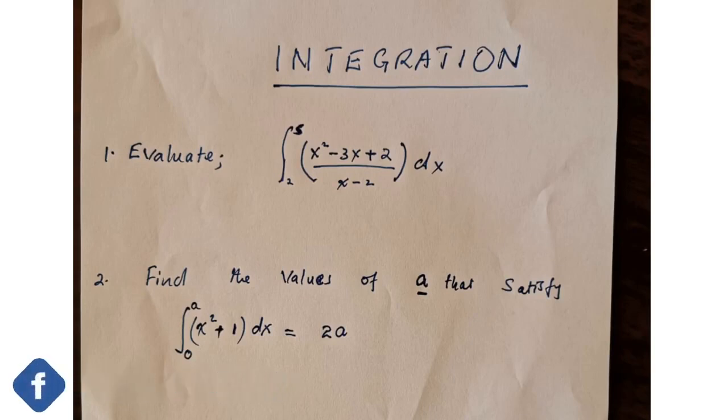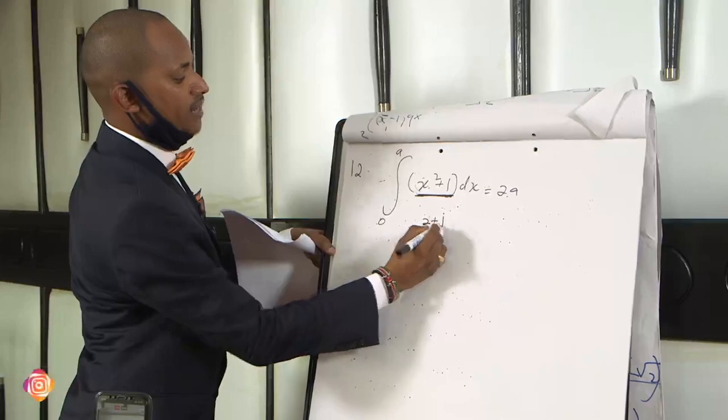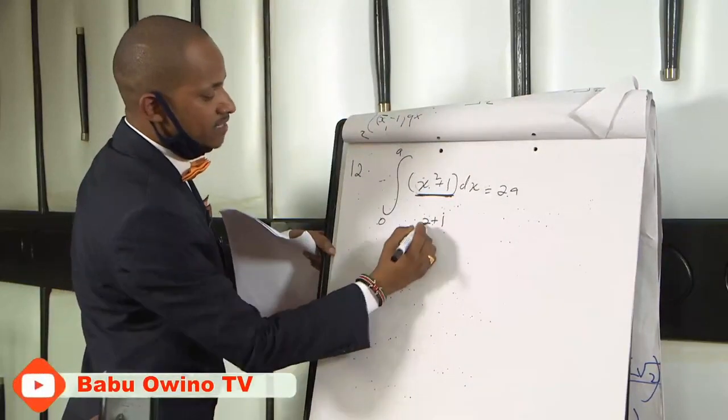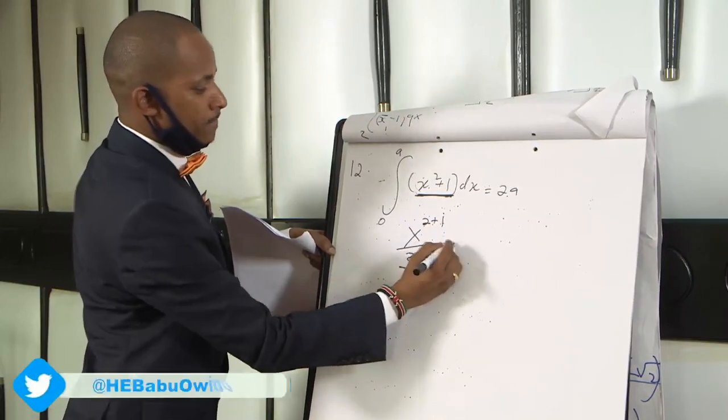We first of all want to integrate this. So by integrating this as I told you you write x. First integrate the first part x. Then it is squared. Add 1 in integration. Then divide by the summation of what you get, which is 3.